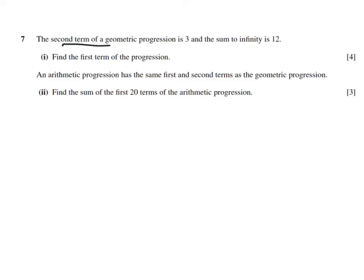The second term of a geometric progression is 3, so ar equals 3. And the sum to infinity is 12. Sum to infinity: a over 1 minus r equals 12. That's the formula for sum to infinity. Now find the first term of the progression.